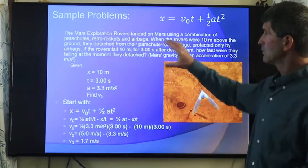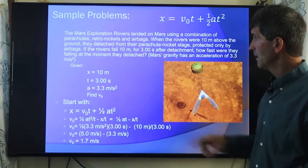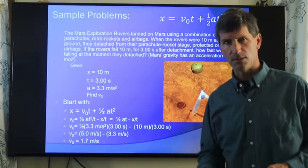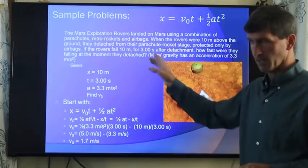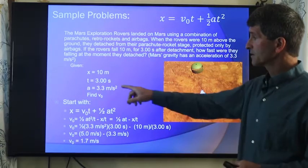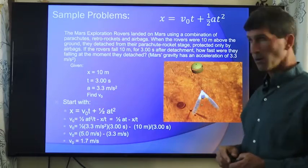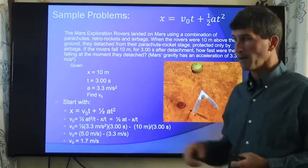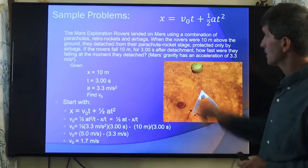Again, write what you have. Displacement is going to fall 10 meters. Time of fall, 3 seconds. You might even say negative 10 meters just because it's in the negative or downward direction, but 10 meters will work here. Acceleration, 3.3 meters per second squared. We don't know the final velocity. And we want to find the initial velocity. We choose that third equation. We can solve for v₀.